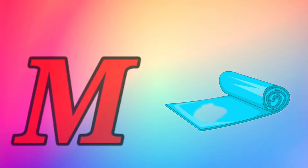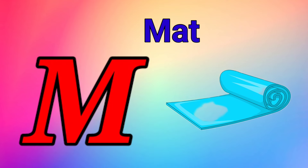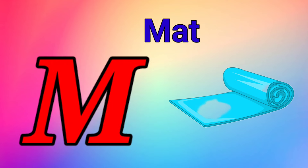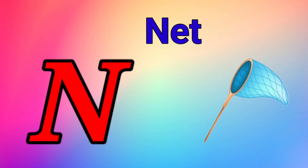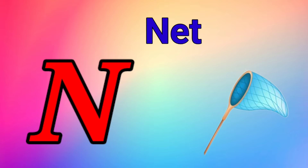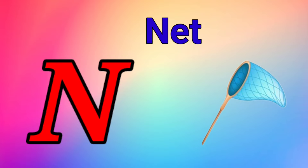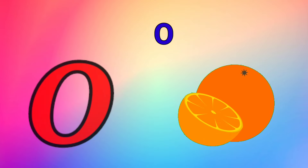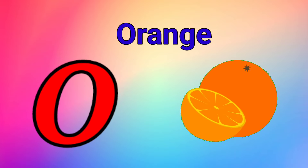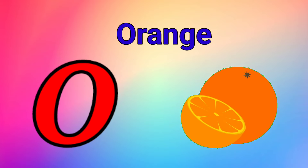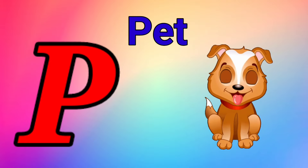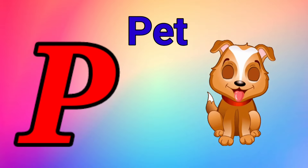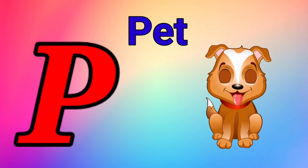M is for mat, m-m-mat. N is for net, n-n-net. O is for orange, o-o-orange. P is for pet, p-p-pet.